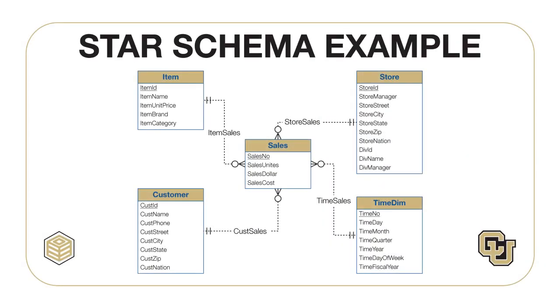The traditional schema pattern for a data warehouse is known as a star schema, consisting of one fact entity type or table surrounded by the dimension entity types or tables in one-to-many relationships. The star schema represents a single data cube. This ERD consists of four dimension entity types — item, customer, store, and time-dim — along with one transaction fact entity type called sales.